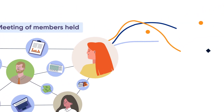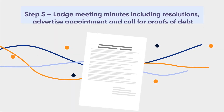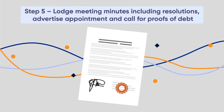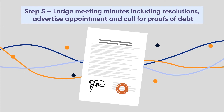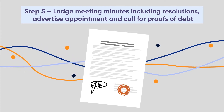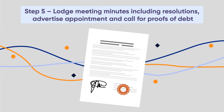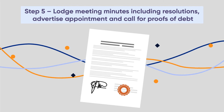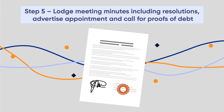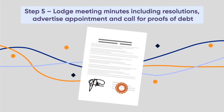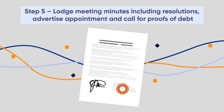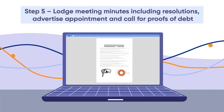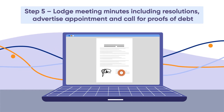Step 5: Lodge meeting minutes, including resolutions, advise appointment, and call for proofs of debt. Lodge resolutions and advertise on the Australian Securities and Investments Commission notices website, asking creditors to lodge any claims against the company they may have.